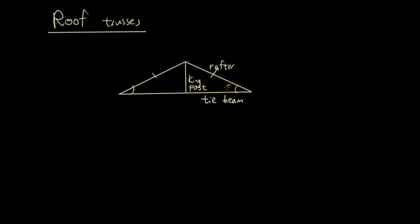The angle that the rafter makes with the tie beam, we call this the pitch angle. And we write the ratio of the king post to the tie beam as the pitch ratio.